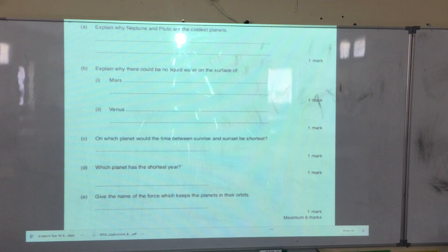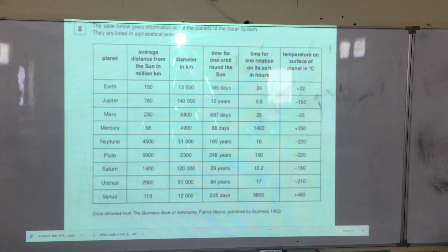If you want to answer that question, then you go back to the data. Neptune - what temperature does it have? Minus 220. Pluto - what temperature? Minus 220.